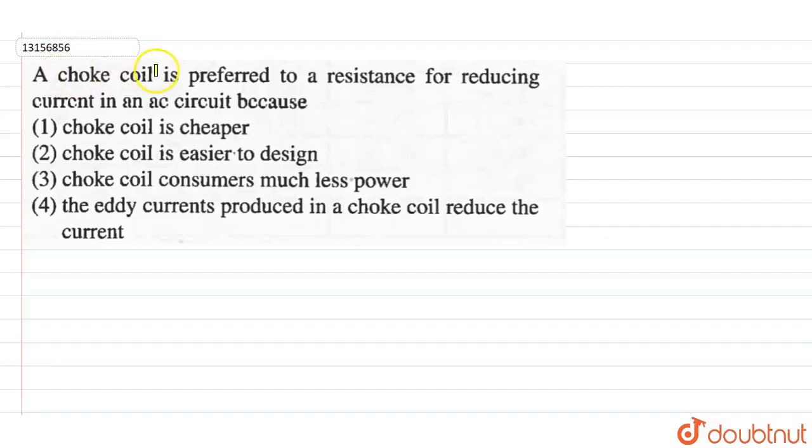Our question is: choke coil is preferred to a resistance for reducing the current in AC circuit, because why do we use the choke coil in the circuit?